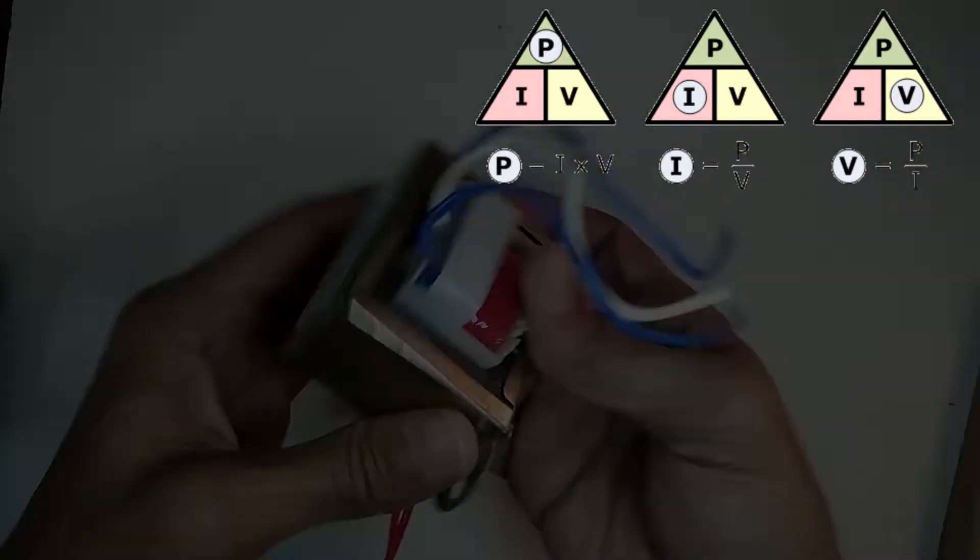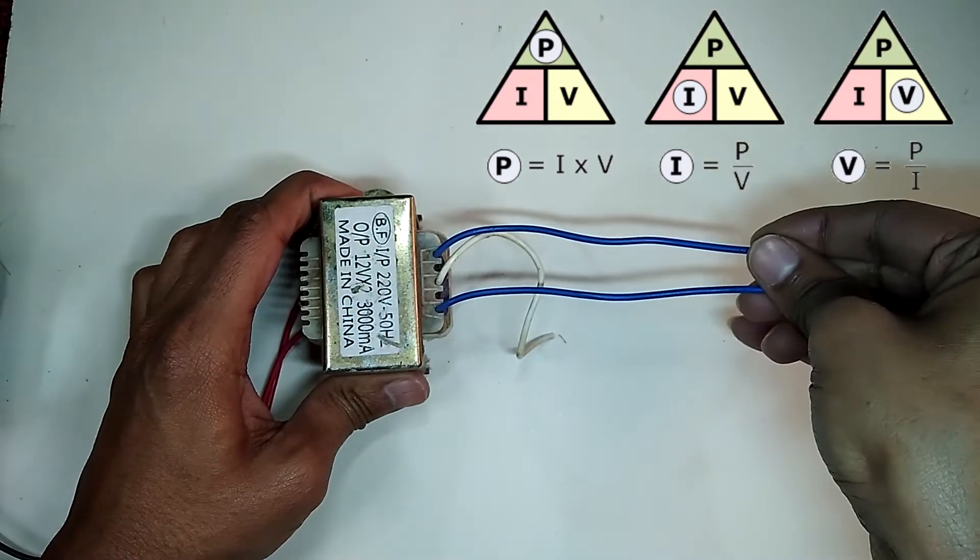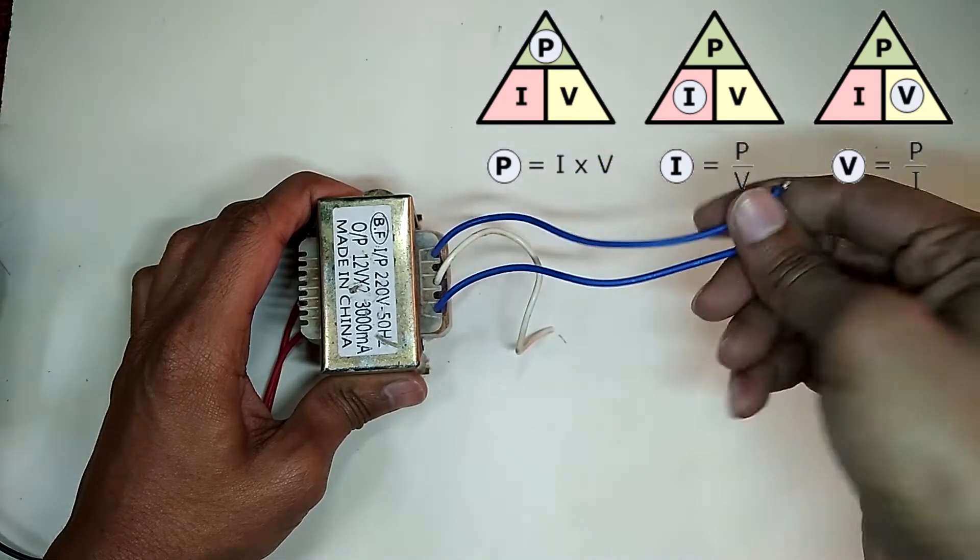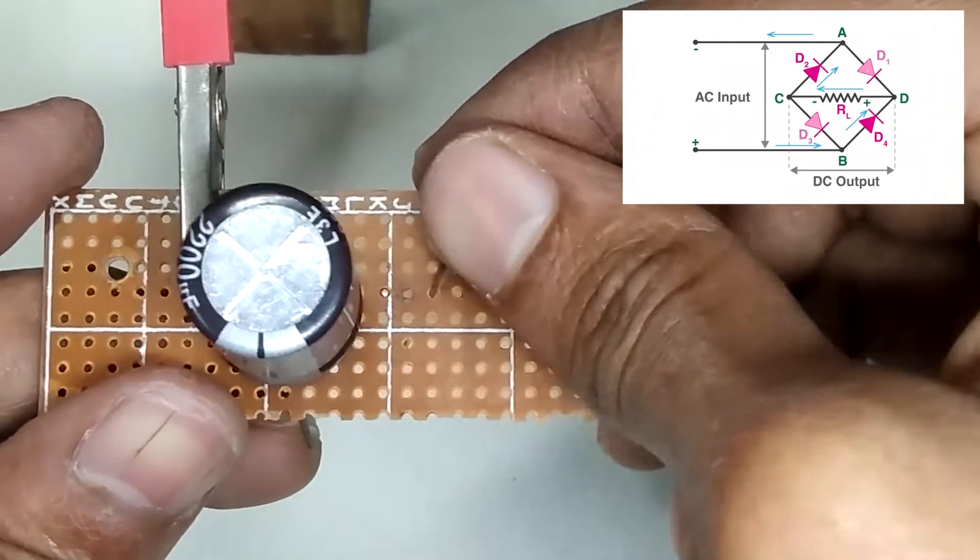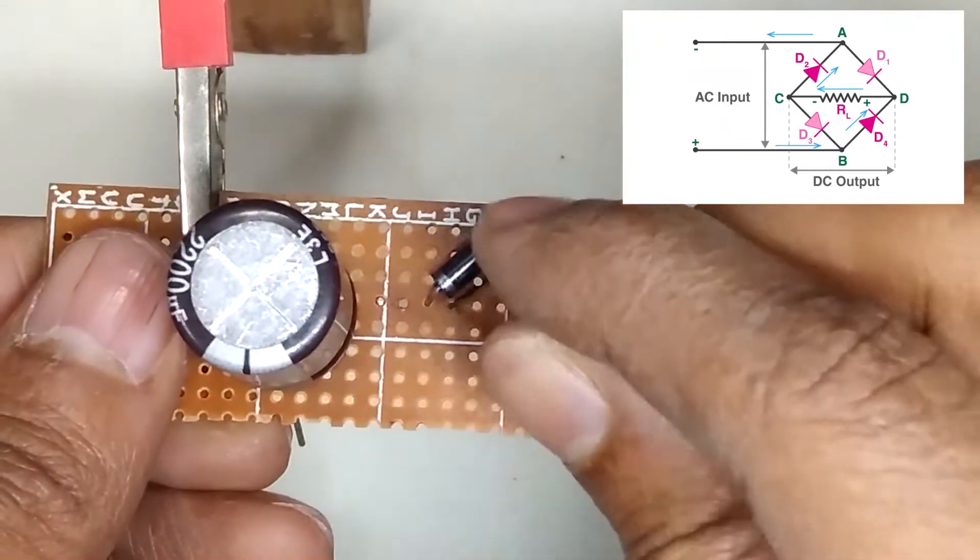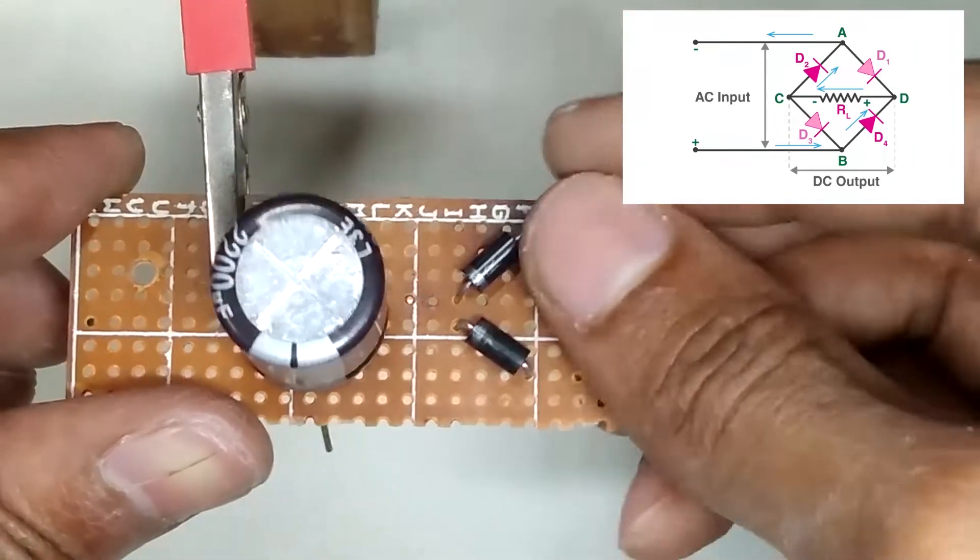These 2 blue wires supply 24 volt AC but it reduces the current to 1.5 ampere because the transformer is 36 watt. The watt is constant for the transformer. If you need more details about transformer please make comment, I will make another video about it.